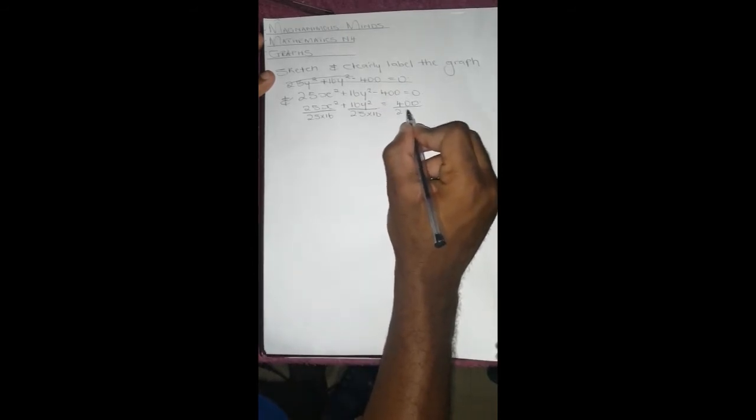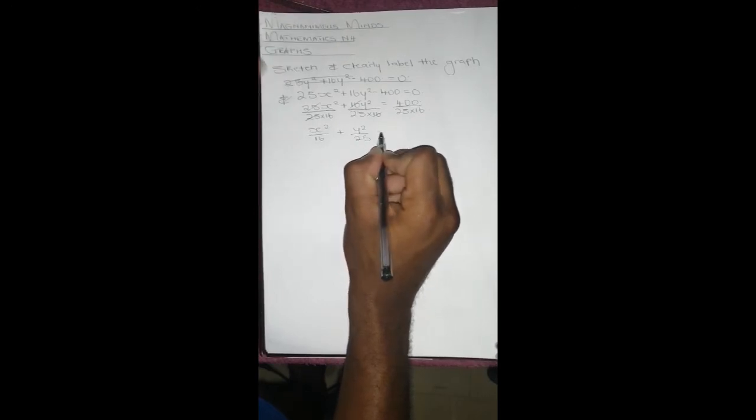We have 25 × 16 over 25 × 16. What we do in the left hand side we do on the right hand side. This 25 and this 25 is going to cancel out, 16 and 16 is going to cancel out. We'll be left with x²/16 + y²/25 = 400/(25 × 16), which equals 1.